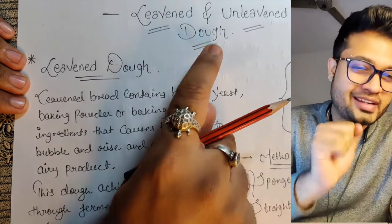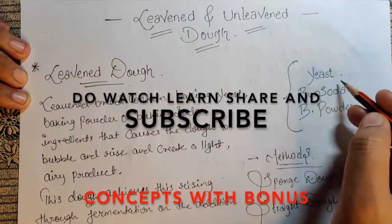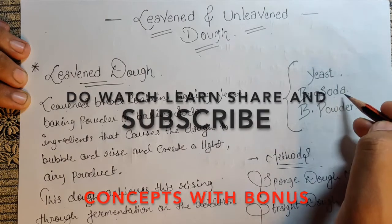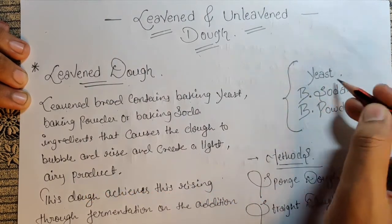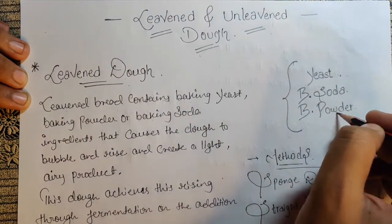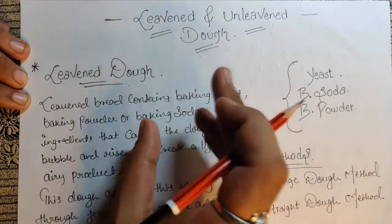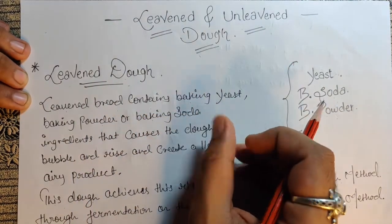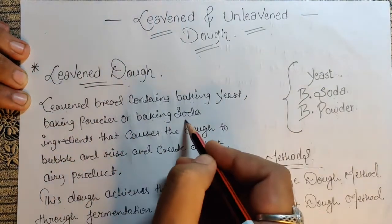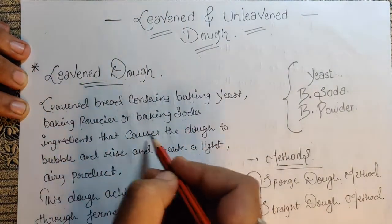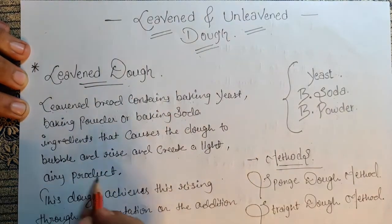Leavened dough means we are using leavening agents, which are yeast, baking soda, and baking powder. These are the leavening agents — this is how our bread rises and gives us the desired volume. Leavened bread contains baking yeast, baking powder, or baking soda — ingredients that cause the dough to bubble up and rise and create a light, airy product.